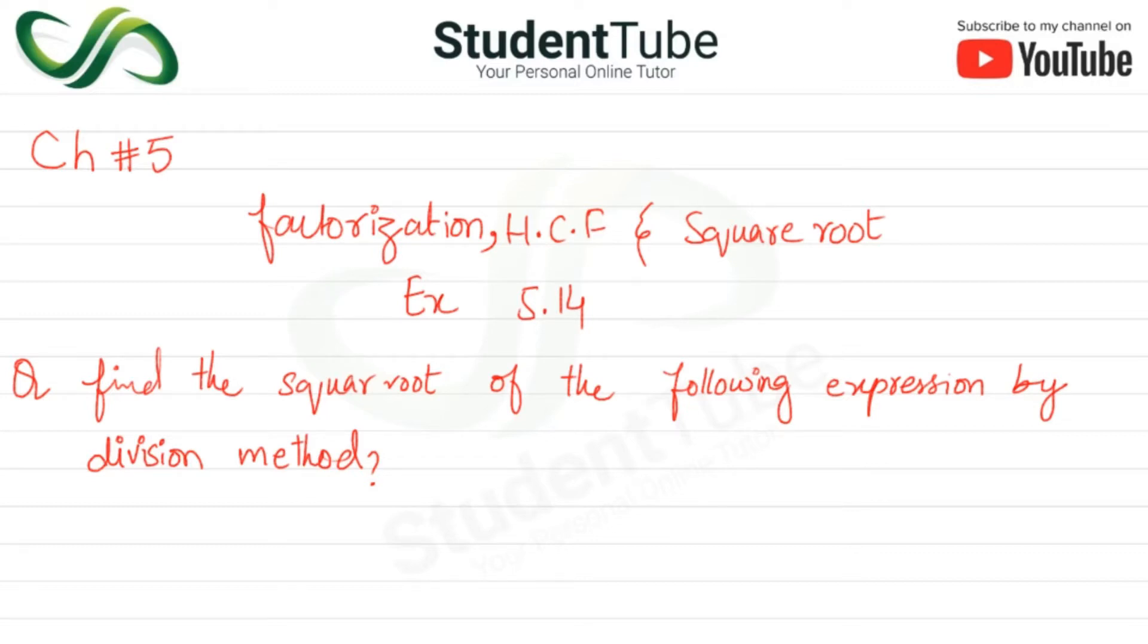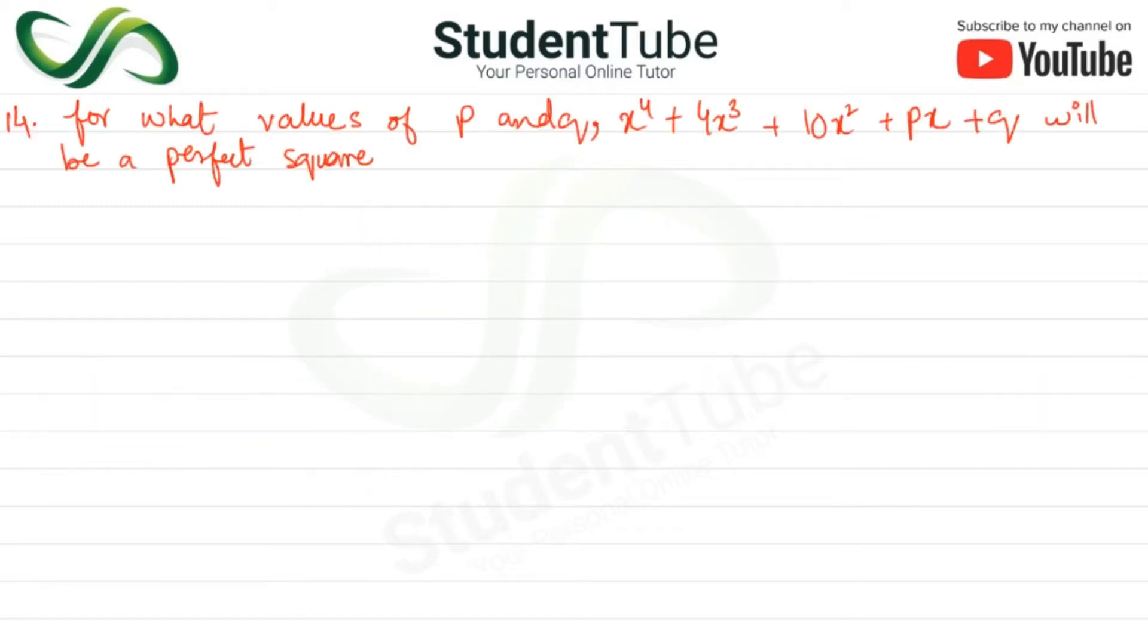The question is: find the square root of the following expression by division method. For what values of P and Q will X^4 + 4X^3 + 10X^2 + PX + Q be a perfect square?